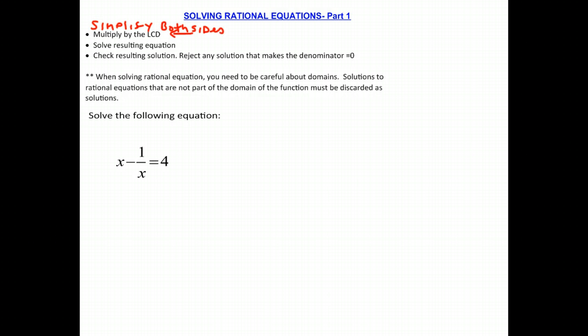Multiply by the least common divisor is often what we do. We solve the resulting equation, and it's really important that you check the resulting solution and reject any solution that makes the denominator equal to zero. So basically when solving these rational equations, you need to also be very careful about domains. Solutions to rational equations that are not part of the domain of the function must be discarded as solutions.